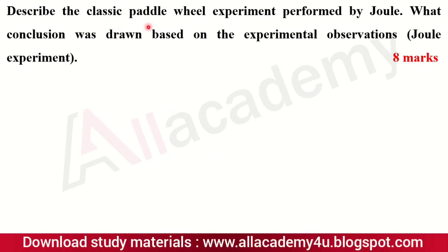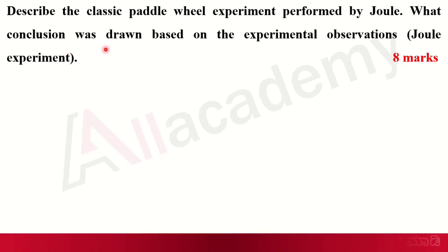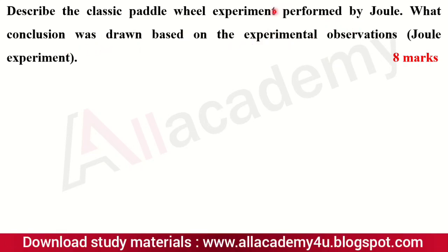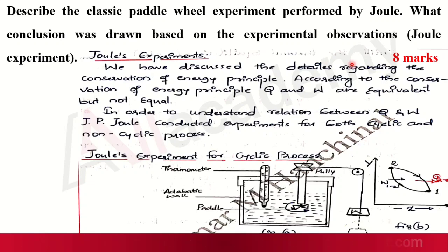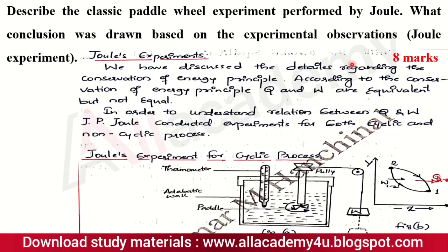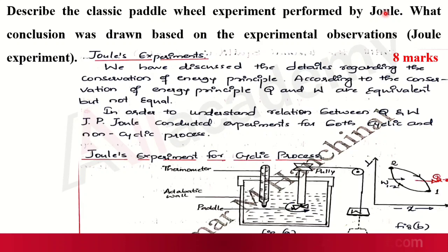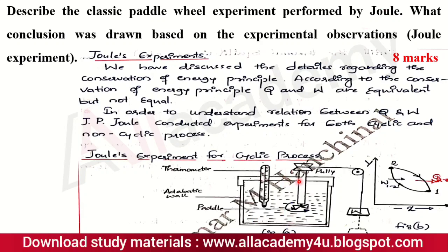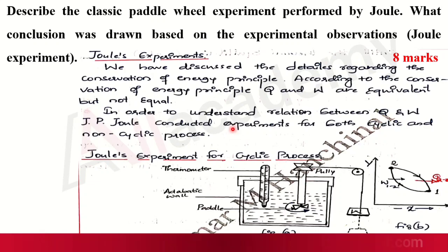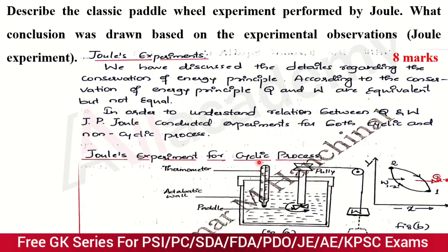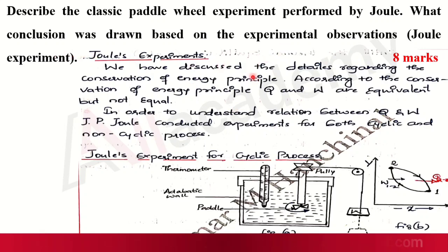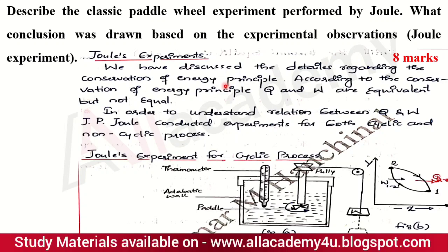The next question is: describe the classic paddle wheel experiment performed by Joule and state what conclusion was drawn from the experimental observation. This question is asked for eight marks. You have to describe the experiment in detail, draw the diagram, and state the conclusion. Six marks are allotted for describing the Joule experiment with the diagram, and two marks for the conclusion drawn from the experiment.